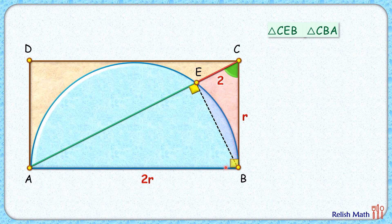So by angle-angle similarity, both these triangles are similar to each other. As the triangles are similar, the ratio of corresponding sides will be equal. That is, CE upon EB will be equal to CB upon BA.